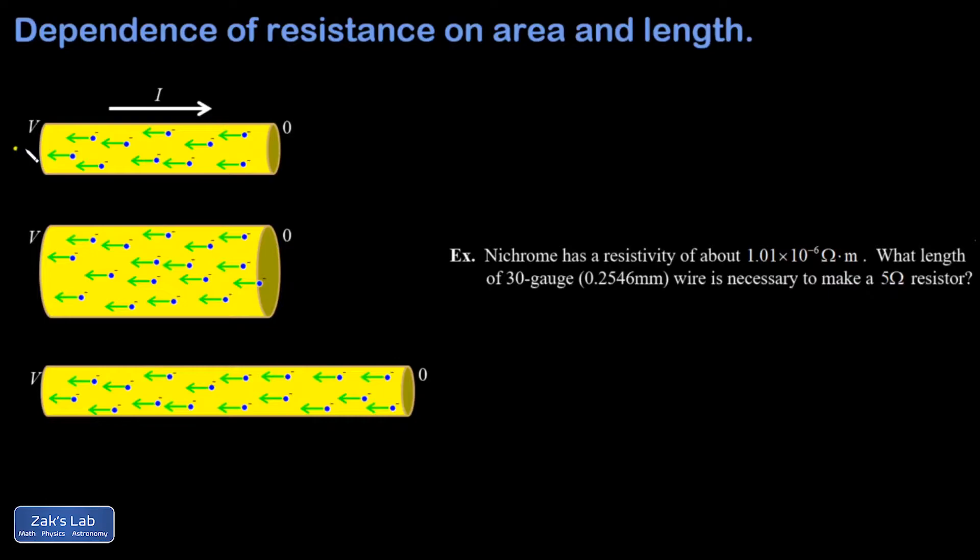Resistance arises from collisions with atoms in the material. These electrons are slamming into atoms and they get slowed down, then they get sped back up by the electric field, then they collide again and so on. These collisions are what dissipates power in a resistor.